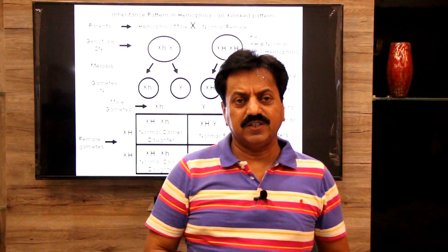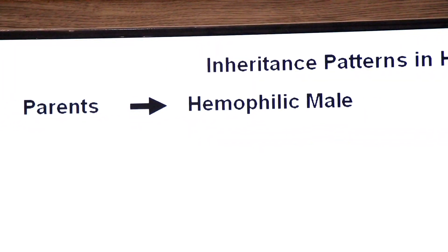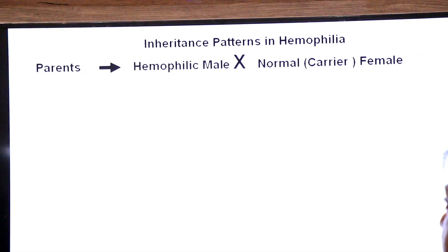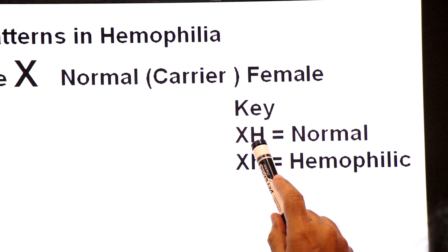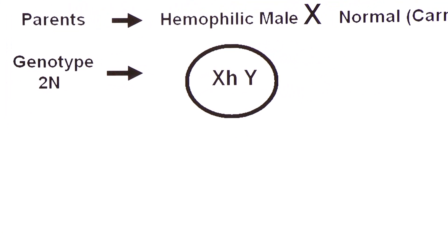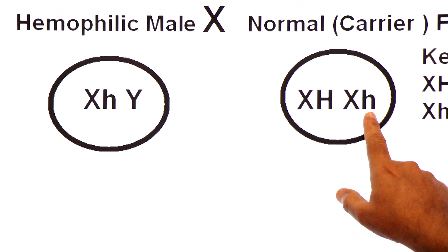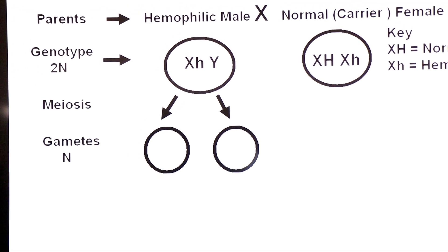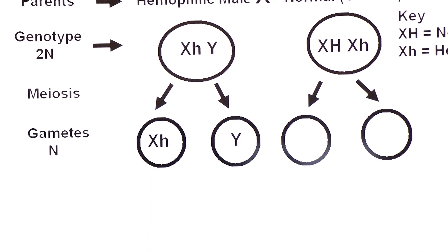Now we move to Cross 2. If a hemophilic male is married to a normal but carrier female, how many normal or defective offspring will there be? Notation: X capital H for normal, X small h for hemophilic. Genotypes: hemophilic male is X small h Y; normal carrier female is X capital H X small h — one defective allele and one normal allele. Drawing gametes via meiosis: from male, X small h to one sperm and Y to another.